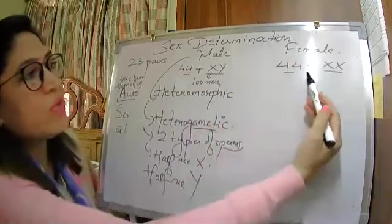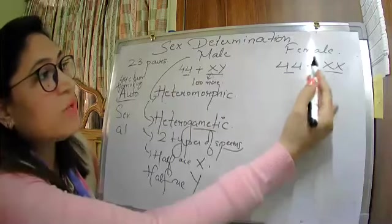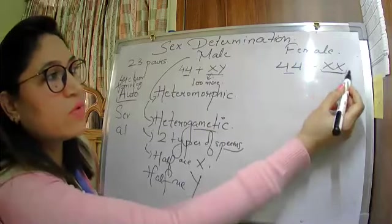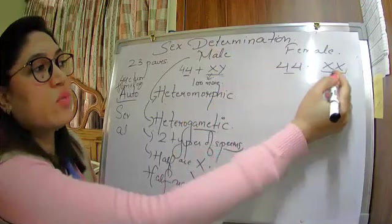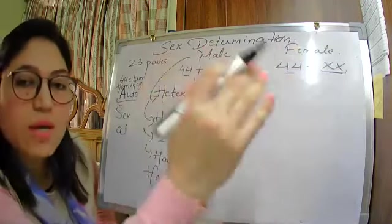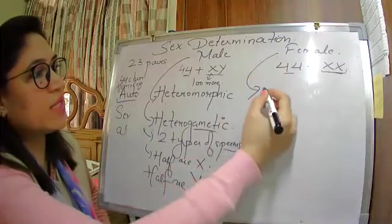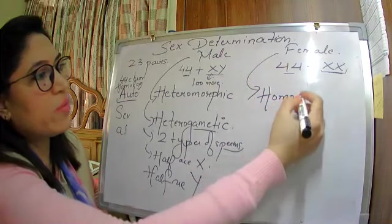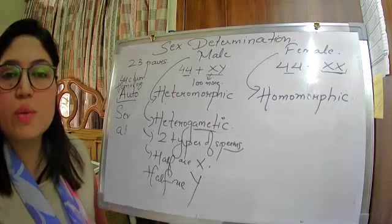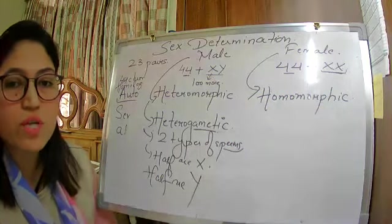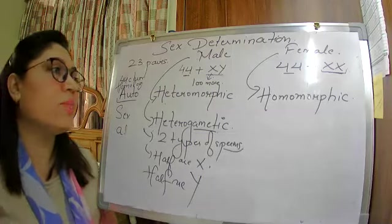Now, coming to females. Females have the same type of sex chromosomes — they can only give X into the gametes. They have two sex chromosomes which are same in size and shape. Since they are same, we call females homomorphic.